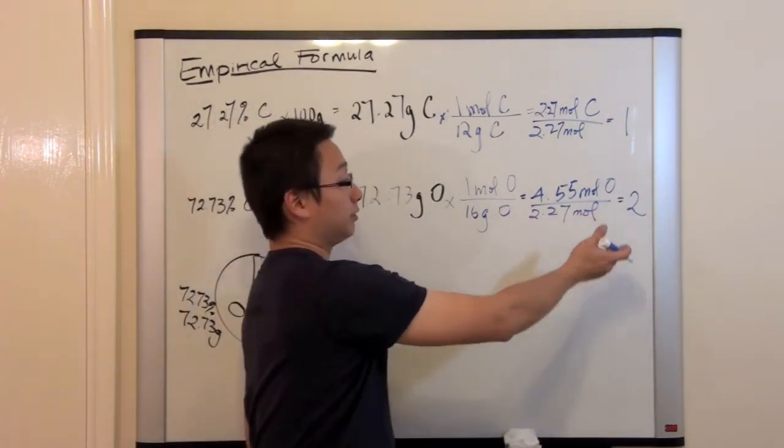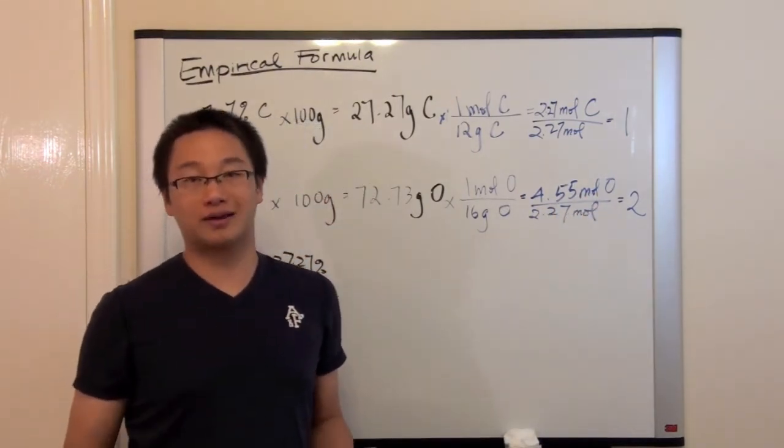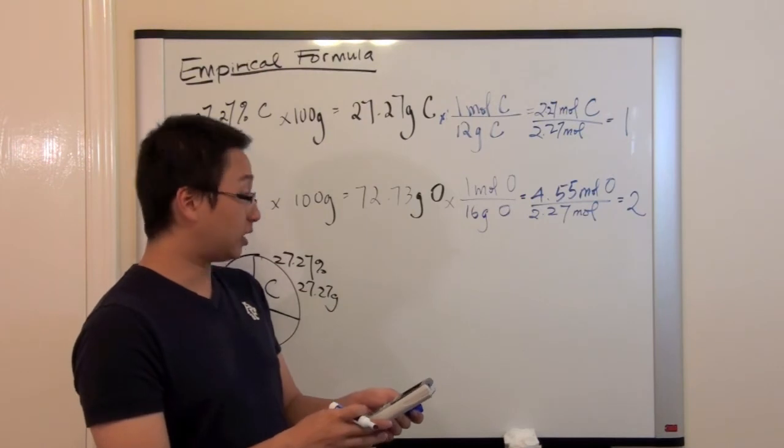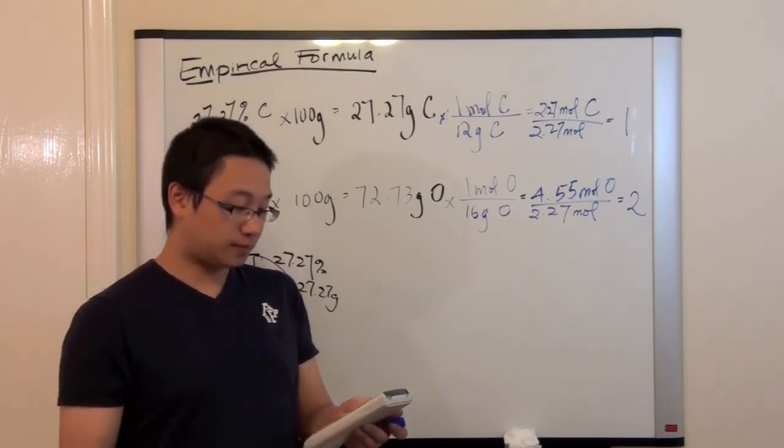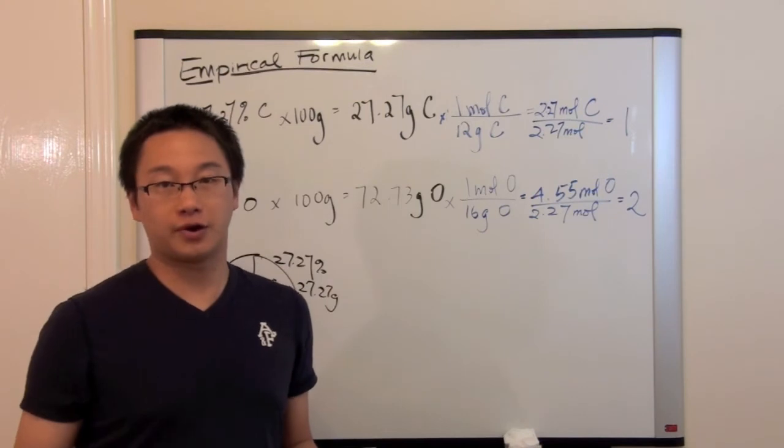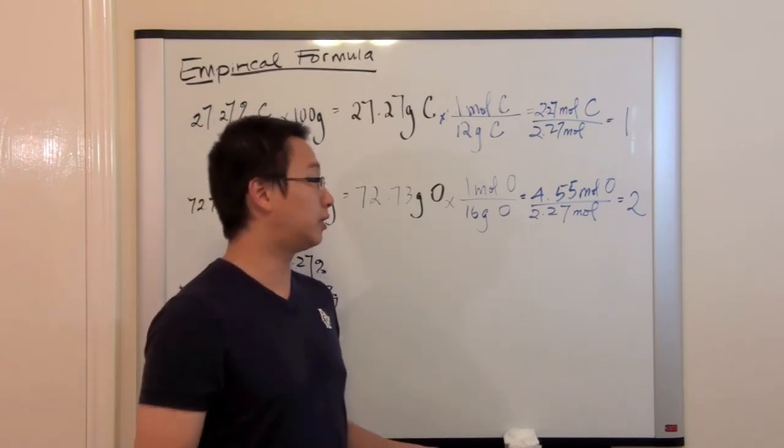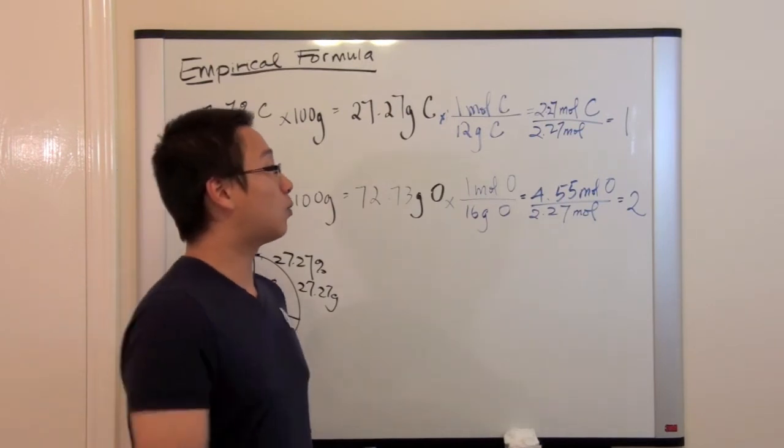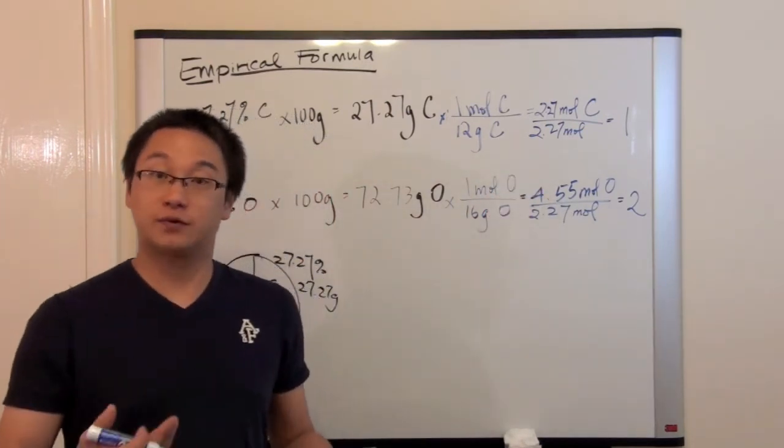Now when you put in the calculator, this may not turn out to be an exact number like two. You'll be at one point. It would turn out to be 2.0044, which is a number very close to two. And then we will round it to the nearest integer. Now the reason why we are rounding, the reason why we are dividing by the smallest number is for this reason.